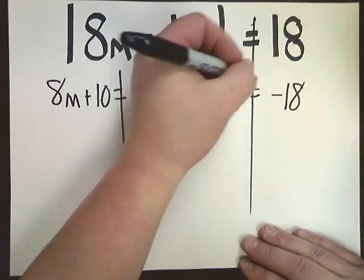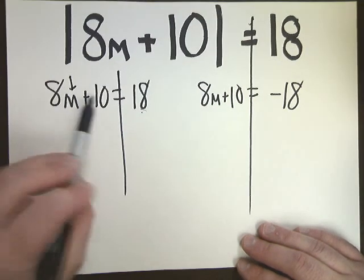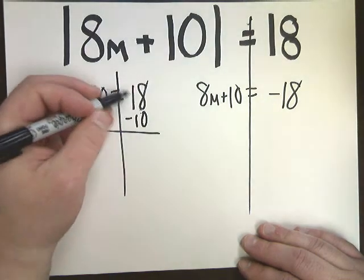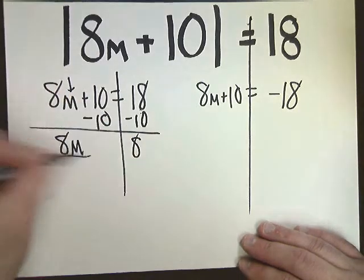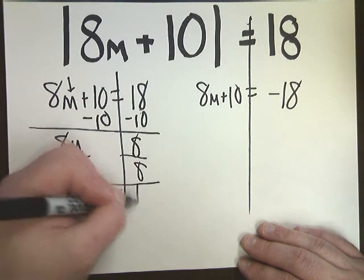So draw the line just like you would before. Here's my m value. I need to get rid of plus 10, so I subtract 10. 18 minus 10 is 8. Divide by 8 on both sides. m is equal to 1.